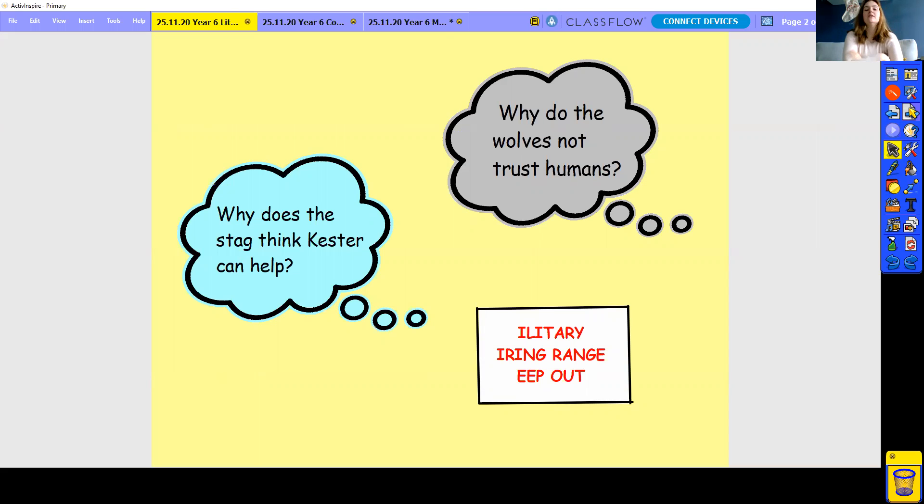Okay, right. So why do the wolves not trust the humans? The wolves say, the head wolf says, the person in charge, he says that humans have only ever brought disease and death, that humans have separated themselves from the animals so far and that they've never done anything good for the animals. So he doesn't trust them at all. Why does the stag think Kester can help? They talk about the dreams and they talk about the person who has the animal tongue and that is Kester, isn't it? So some of the animals believe that Kester is the one that can save them and some of them believe that he's a human so therefore he can't do anything good for any of them.